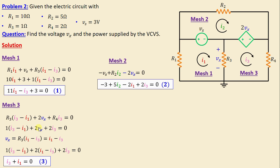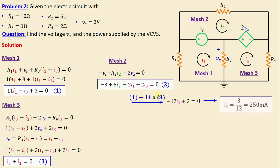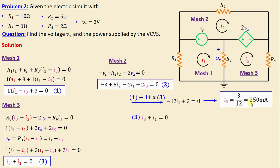Using equation manipulation — combining equation one minus 11 times equation three — we obtain: negative 12 i3 plus 3 is equal to zero. That means i3 is equal to 3 over 12, giving us 250 milliamps.